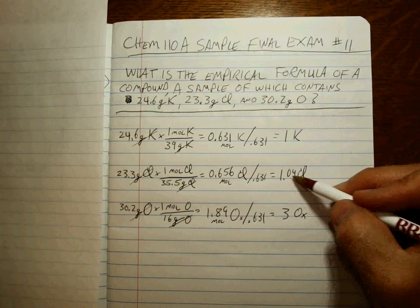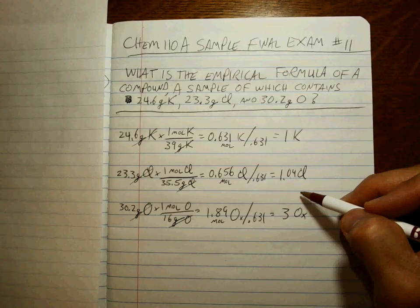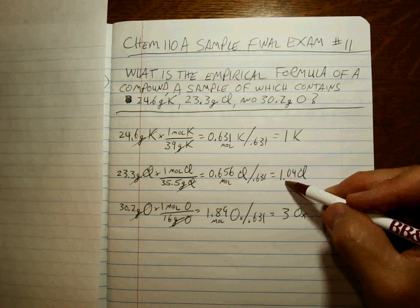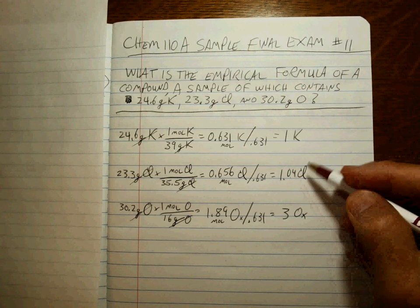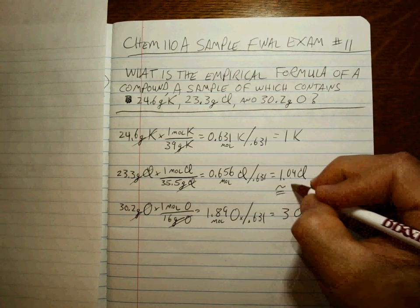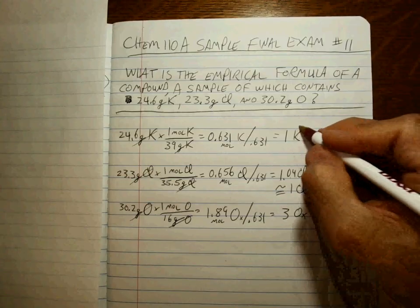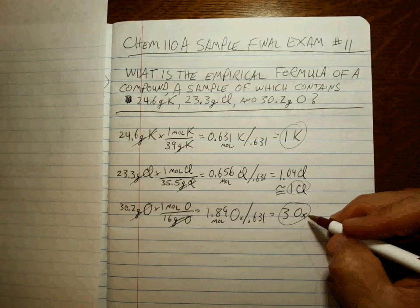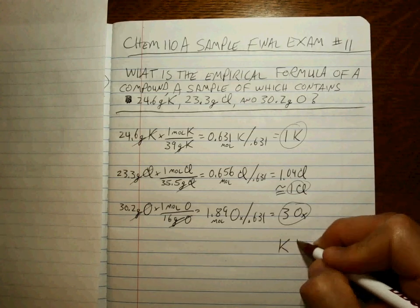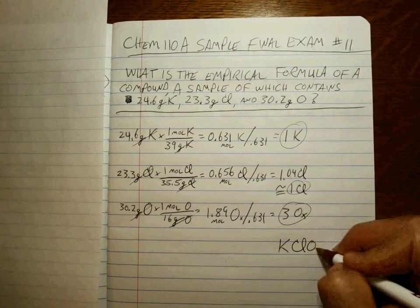Well, that's really close to one, isn't it? It definitely isn't close to 0.25 or 0.33 or 0.50. That's approximately equal to one chlorine, so now we've got 1 K, one chlorine, and three oxygens: KClO3.